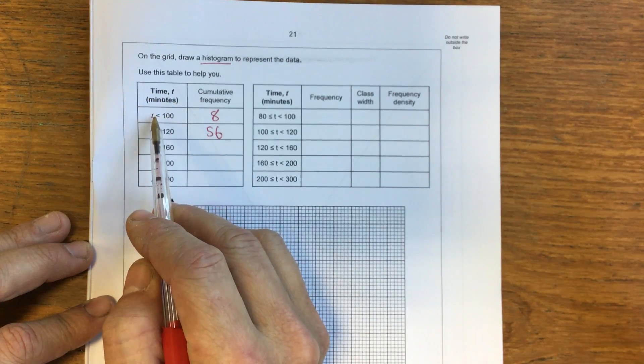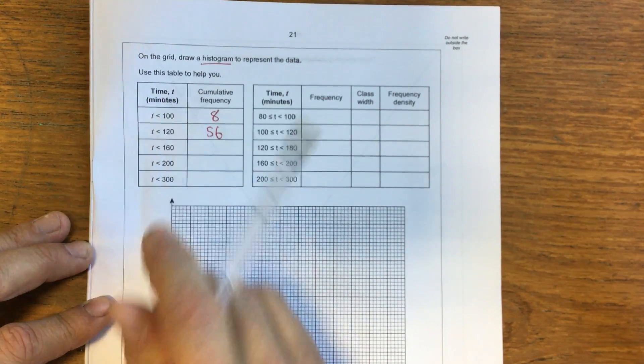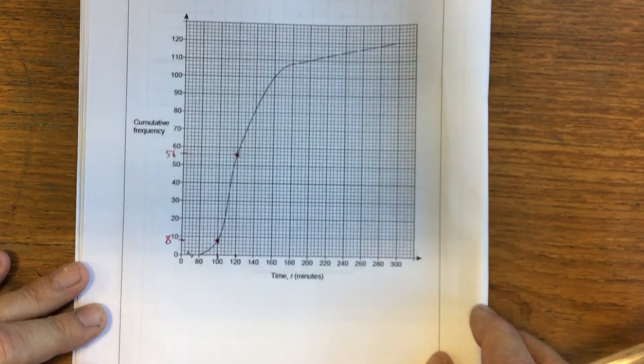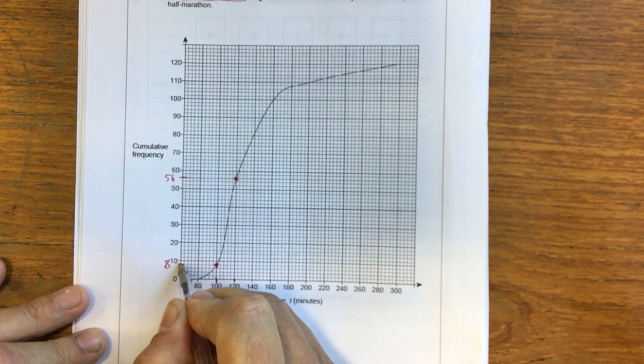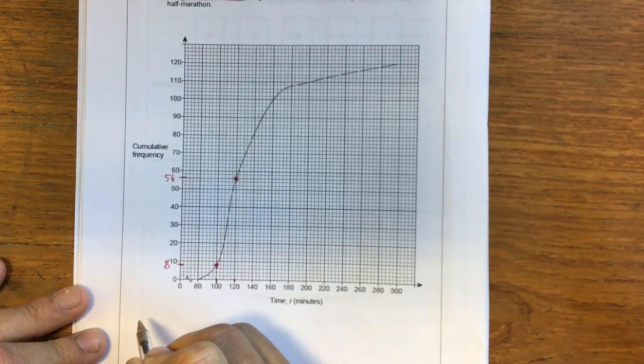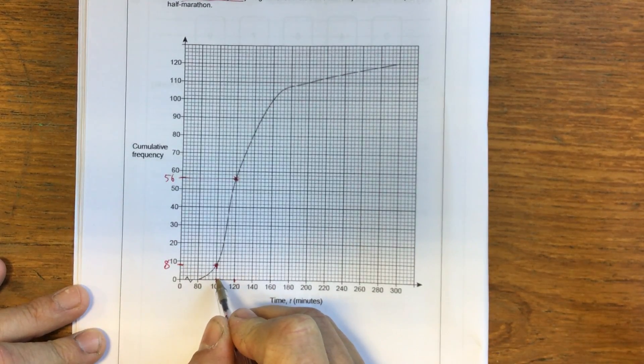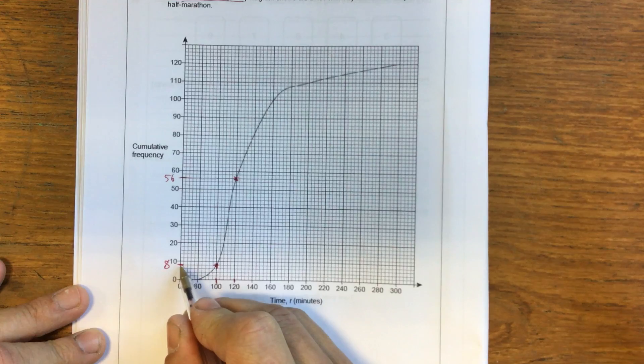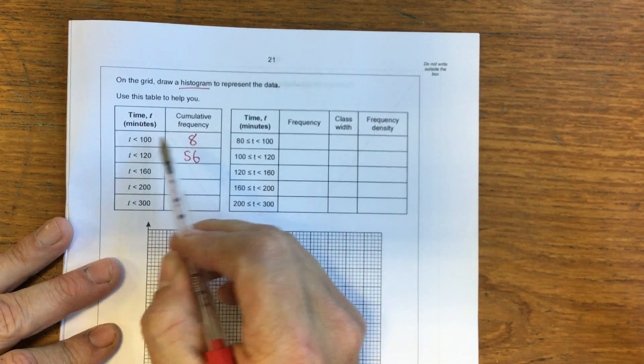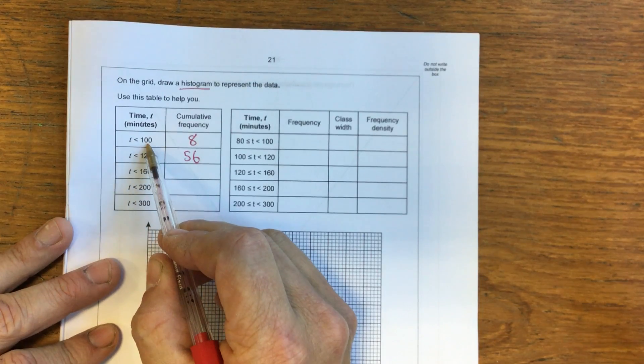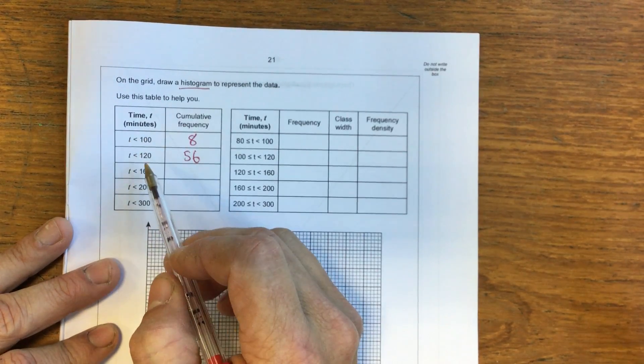So in the table it's got time in minutes. Time is less than 100. If we come across to this graph we can see that when time is 100, if I project up, that's 8 on the cumulative frequency axis. So it means for times less than 100, how many people have come through? Well there's 8. So in this table here I say there's 8 people who had a time of less than 100 minutes when they were doing the marathon.